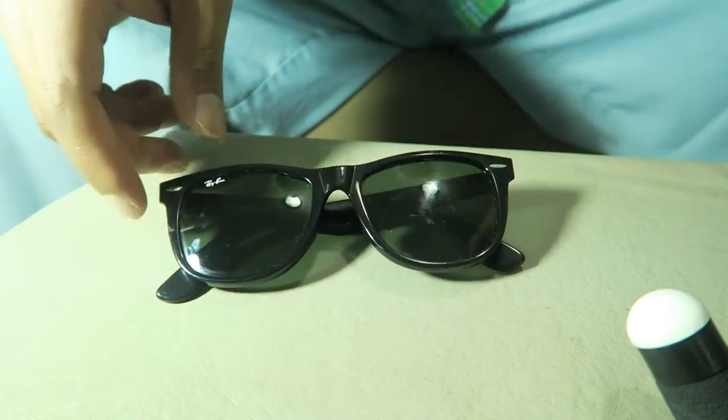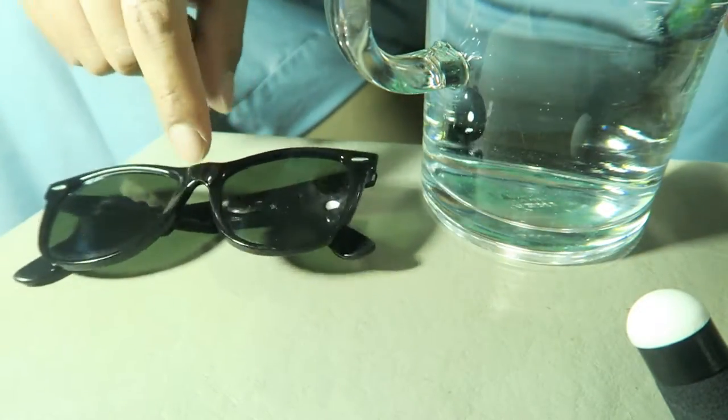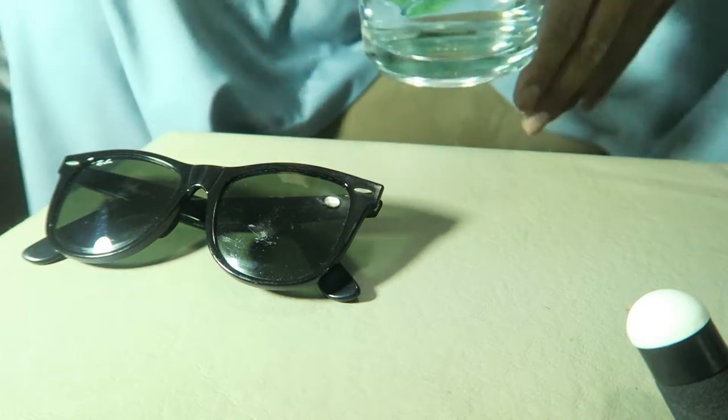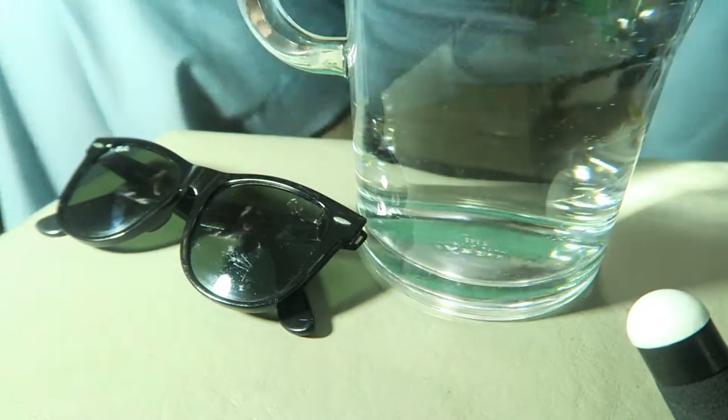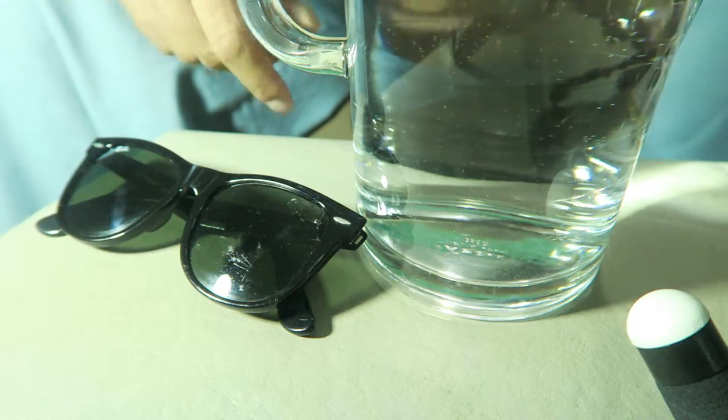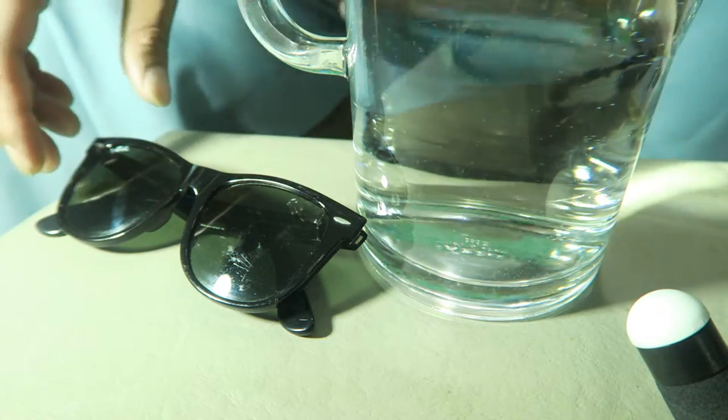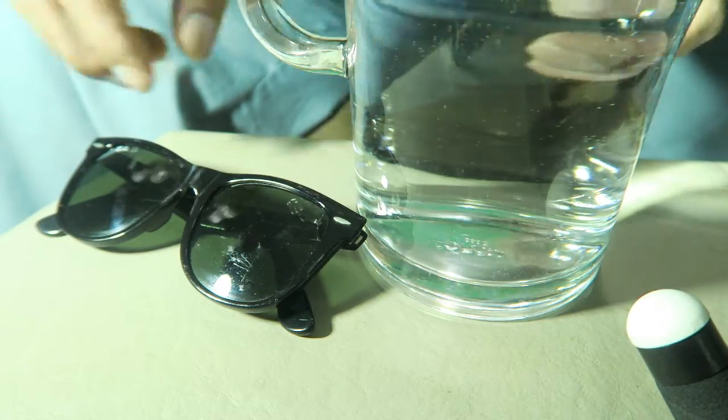So a real quick hint on what you're gonna do: since these things are so rigid, this is a pitcher of hot tap water. So I just go to the sink and turn it on hot, let it run for about 30 seconds till it's about as hot as it's gonna get, and then just fill up something that you can dump these glasses in.